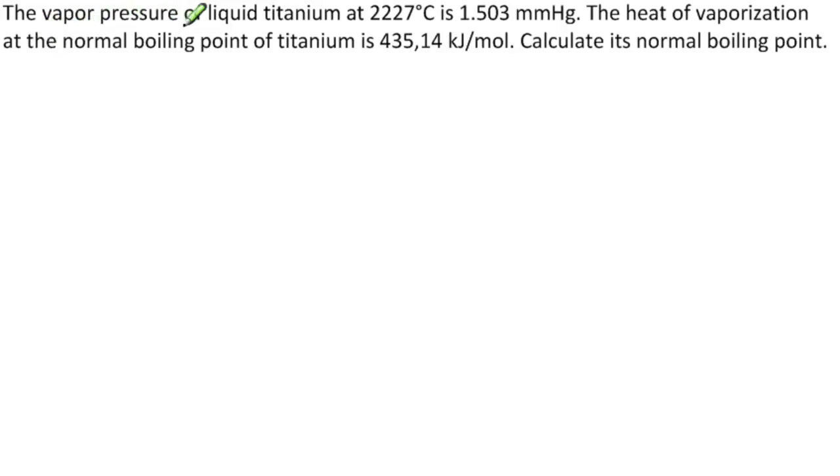The problem reads, the vapor pressure of liquid titanium at 2,227 degrees Celsius is 1.503 millimeters mercury. The heat of vaporization at the normal boiling point of titanium is 435.14 kilojoules per mole. Calculate its normal boiling point.